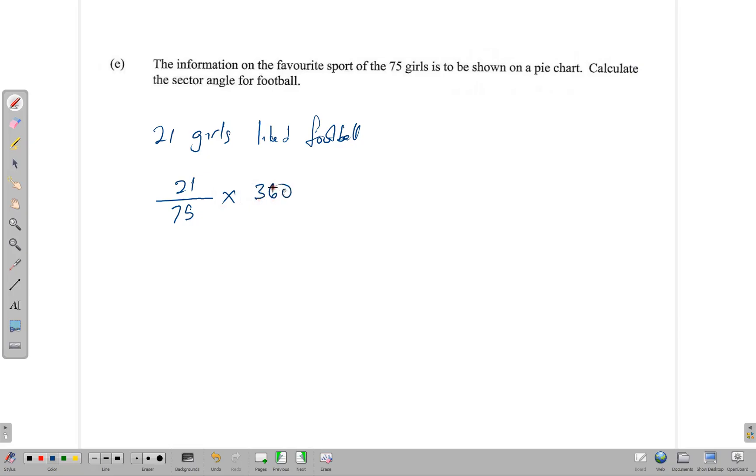So the angle will be 21 over 75, or 21 divided by 75, multiplied by 360. What we need to do is pop out your calculator: 21 divided by 75 times 360 gives us 100.8 degrees, and that gives us the angle for football. Pretty interesting question - not that difficult, but very interesting because it brought in a couple concepts: pie charts, bar charts, ratios, all in the same question.